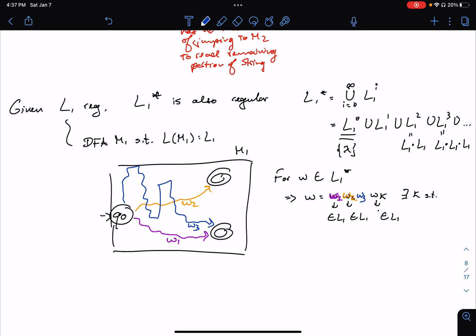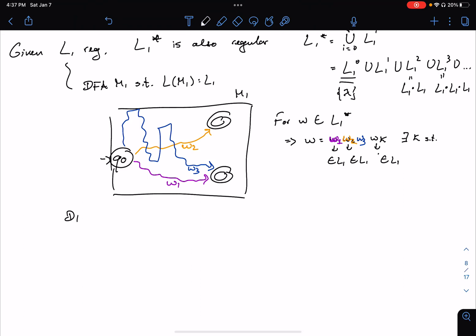So all we really need to do is create a DFA M' such that L of M' is equal to L1 star. We need to create a behavior of being able to walk through the machine M1, and then go back and start a new, completely different walk, and then go back and maybe start a new, completely different walk, and so on.